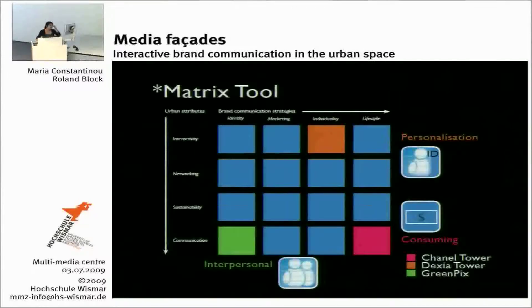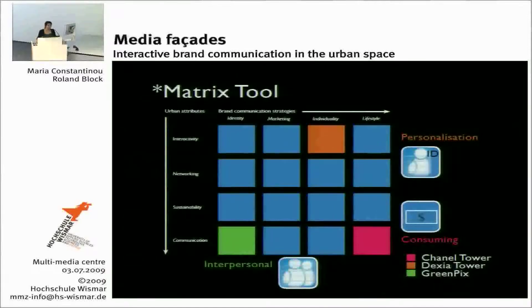We came up with a metrics tool. On the first axis we have urban attributes such as interactivity — how people perceive and how much interaction there is between the media facade, the user, and the space. The second is networking: is there any linking of people to the urban space? Third is sustainability. Fourth is communication: is there any communication letting people interact between the media facade and the public space? The second axis has identity, marketing, individuality, and lifestyle.